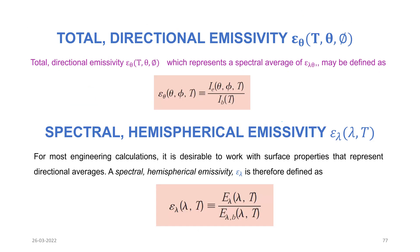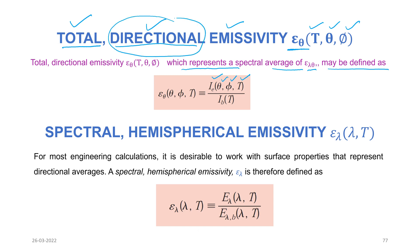Total directional emissivity ε_θ covers the whole wavelength range but a particular direction. It is a function of temperature, theta, and phi, and represents the spectral average of ε_λθ. It is defined as the directional emissive power of the surface i_e(θ, φ, T) divided by i_b(T) — the black body emissive power, which is independent of direction.